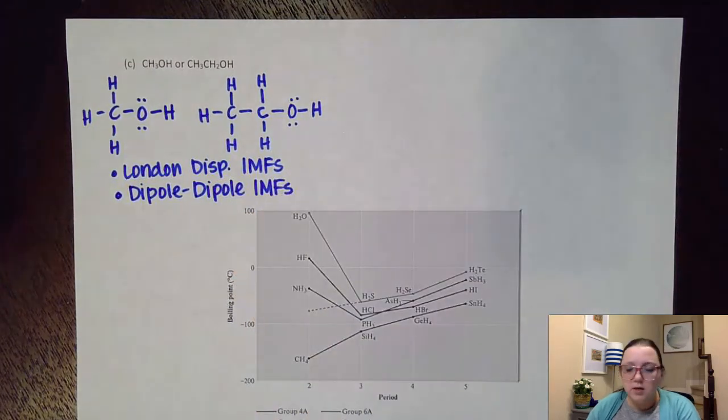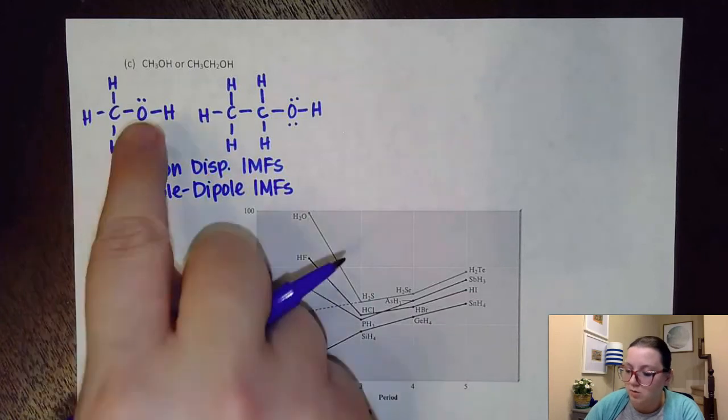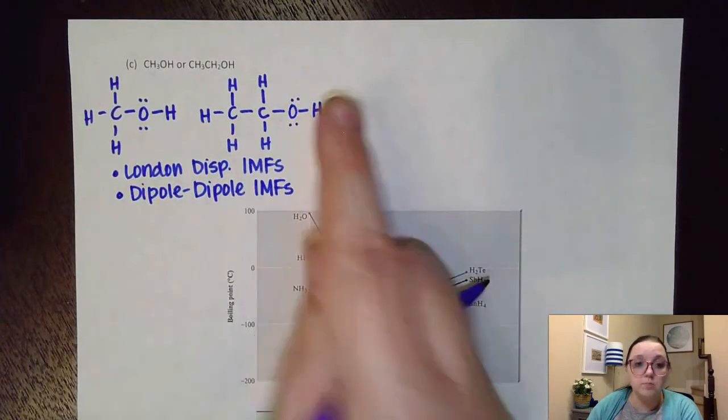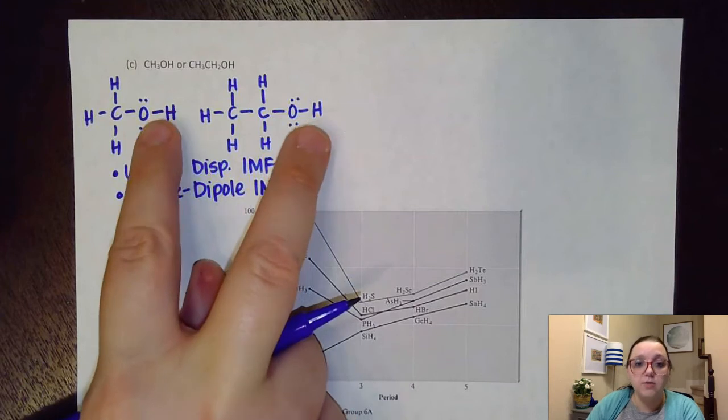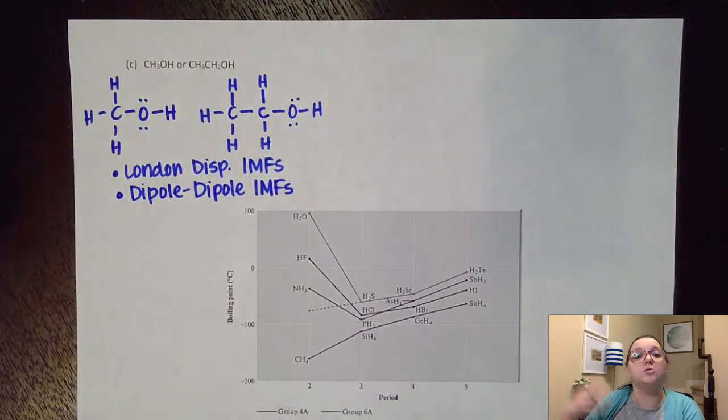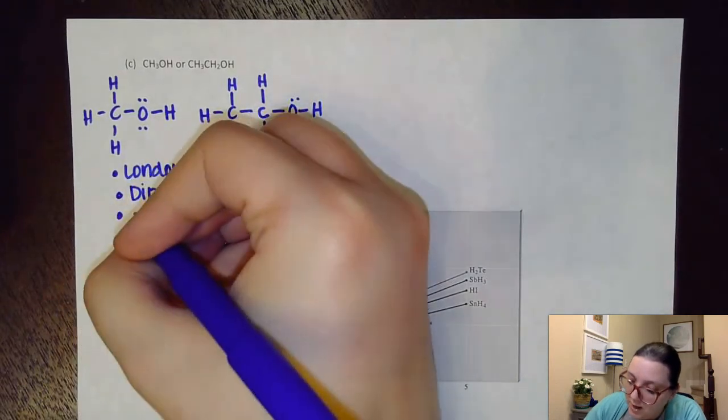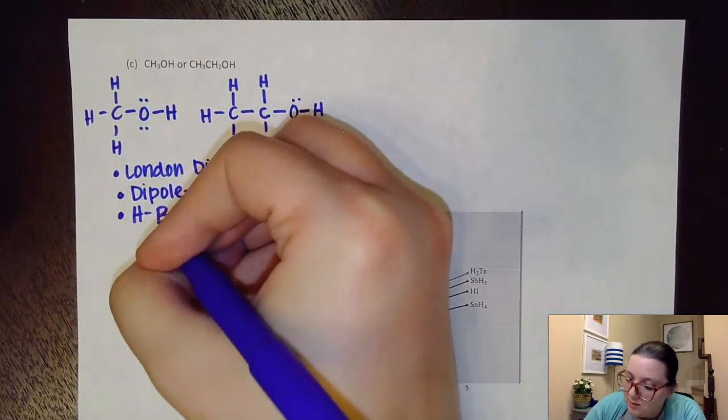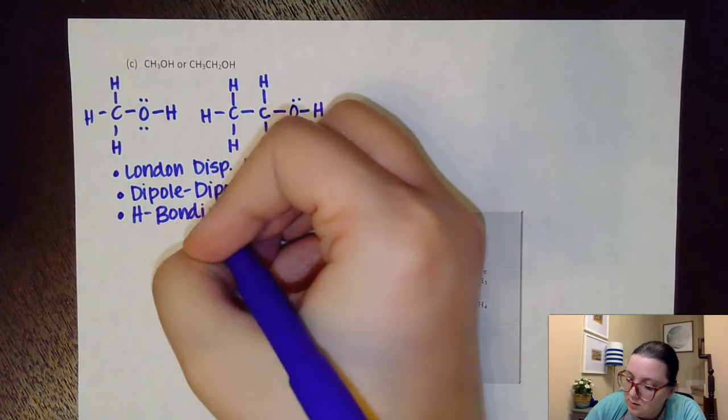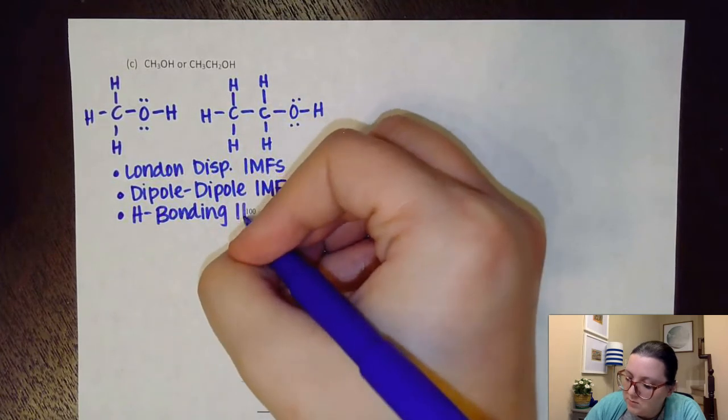And if I keep on looking here, once I check for that, I want to check for hydrogen bonding. I have oxygen bonded to hydrogen in both of these. So both of these molecules can make those hydrogen bonding force attractions to other molecules. So both of them would have hydrogen bonding IMFs as well.